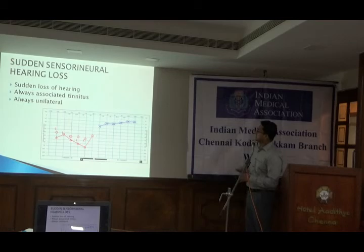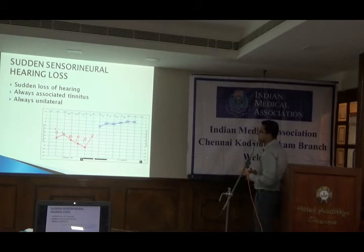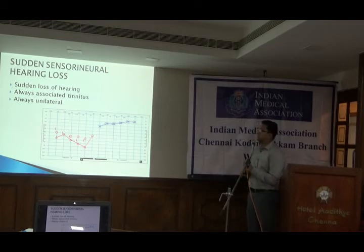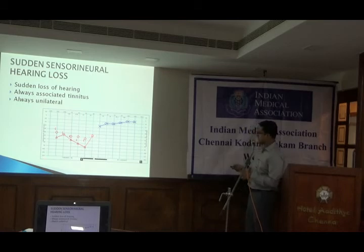The last topic is sudden sensorineural hearing loss. This is commonly seen in ENT practice, though patients often do not come on time. Classically, the patient loses their hearing suddenly — it will always be unilateral — and they will also report tinnitus. Both symptoms will always be together: unilateral sudden loss of hearing with tinnitus. On audiogram, we see the patient has lost around 60 to 70 dB hearing at such a short interval, while the other side is normal.